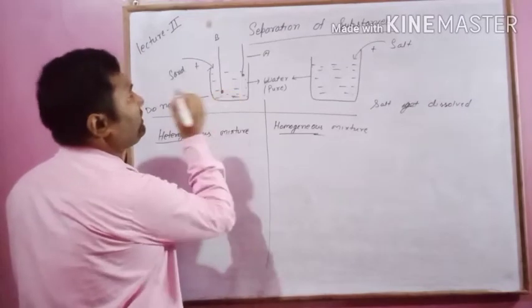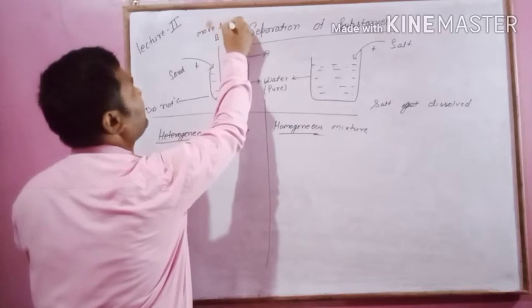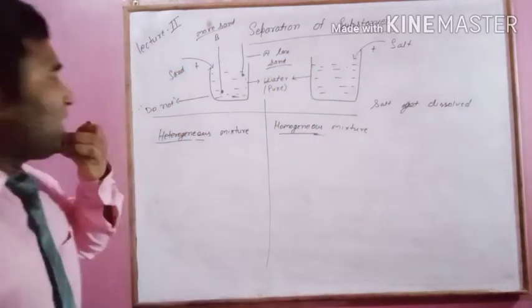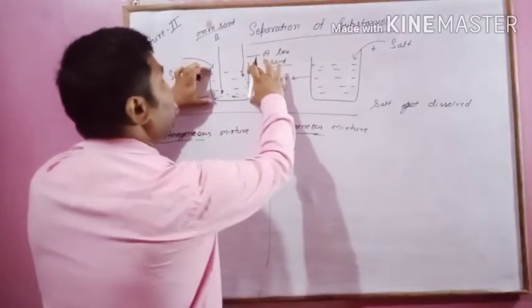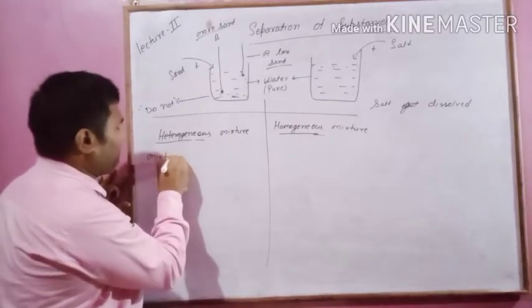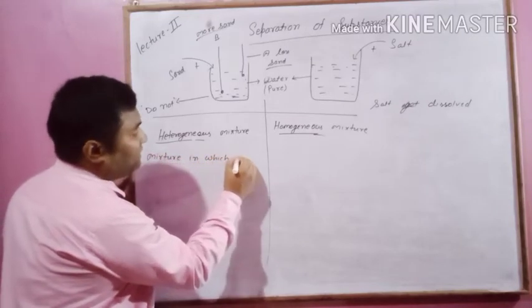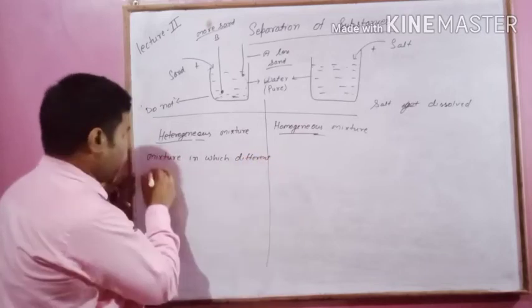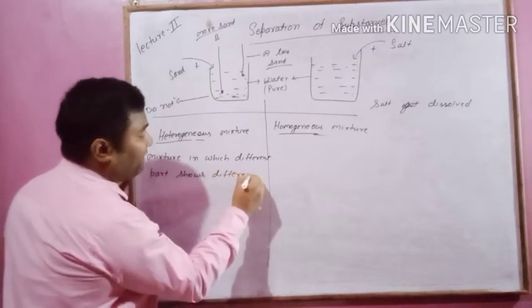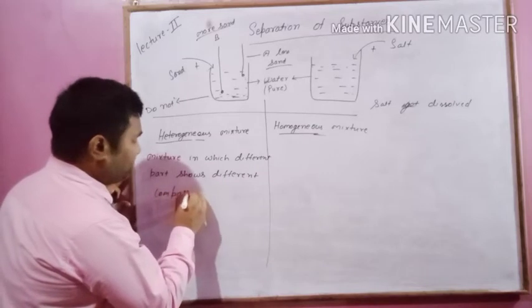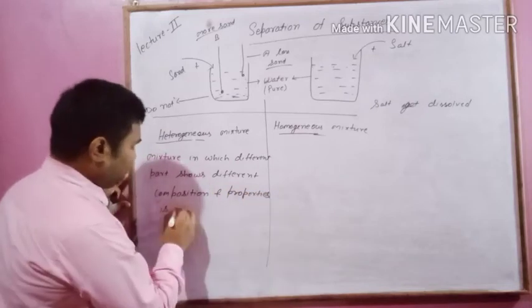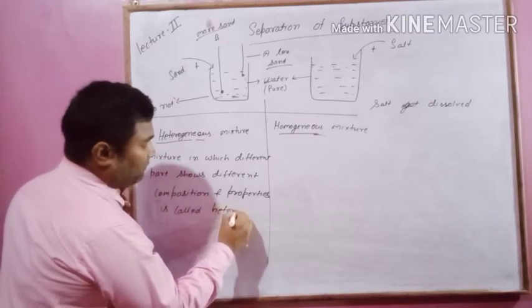Sample B contains more sand and Sample A contains less sand, so the composition of sand is different within the mixture. A heterogeneous mixture is a mixture in which different parts show different composition and properties.